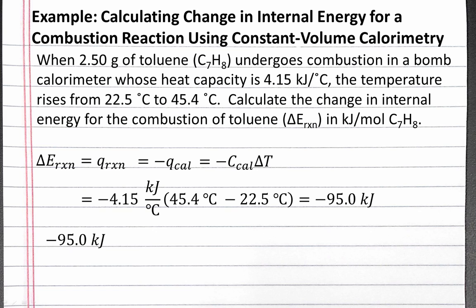This negative 95 kilojoules is the change in internal energy when 2.5 grams of toluene undergo combustion. However, we want to calculate the change in internal energy in units of kilojoules per mole of toluene. So we'll convert this negative 95 kilojoules per 2.5 grams of toluene into kilojoules per mole of toluene using dimensional analysis.